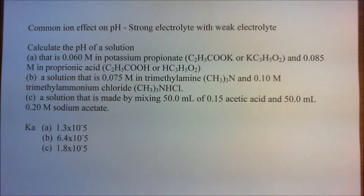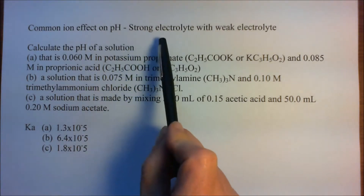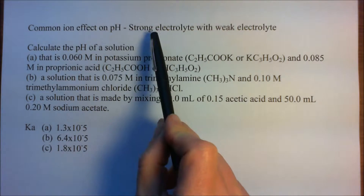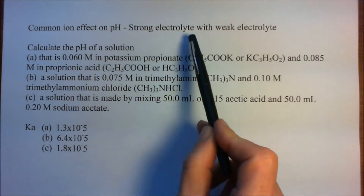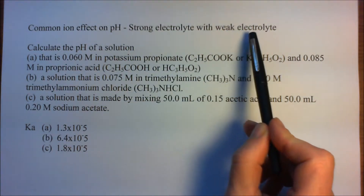Common ion effect on pH. Sometimes we have to calculate situations where we have mixtures of different chemicals. In one situation with a common ion effect, we have a strong electrolyte with a weak electrolyte. A strong electrolyte means that whatever we have dissociates completely, and the weak electrolyte is in some sort of equilibrium.